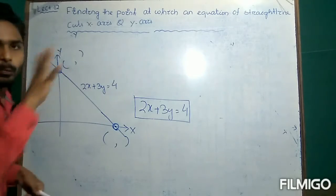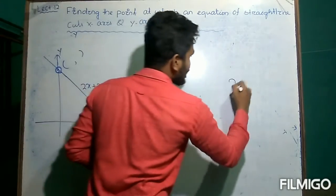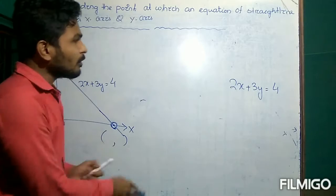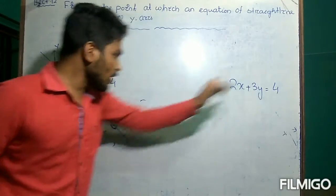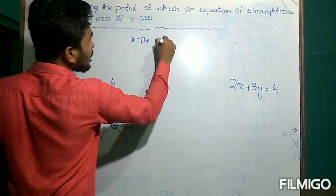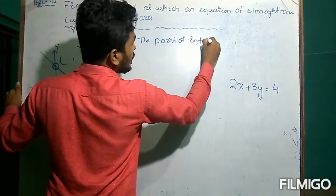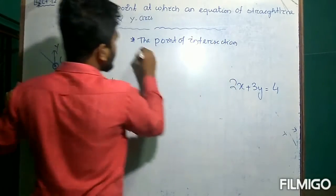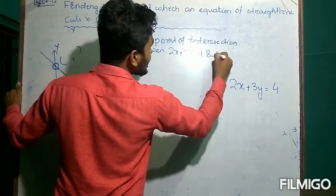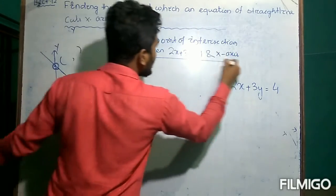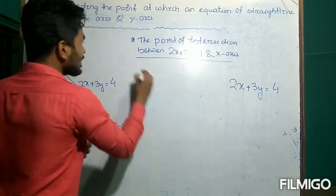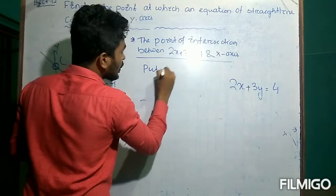Let us see how we can find these two points. Suppose this is the linear equation: 2x plus 3y is equal to 4. We will find at which point this equation, or this straight line, meets the x-axis. First we will find the point of intersection between 2x plus 3y equals 4 and the x-axis. For this, simply put y equal to 0.